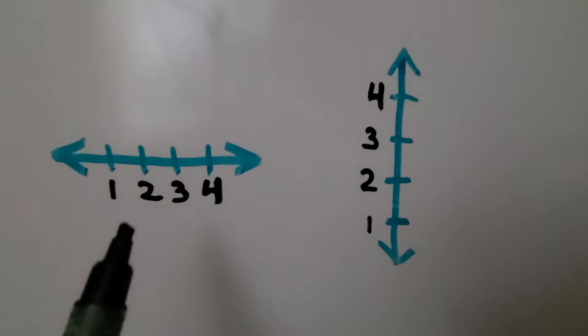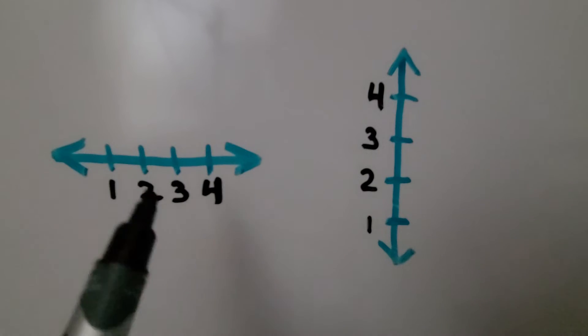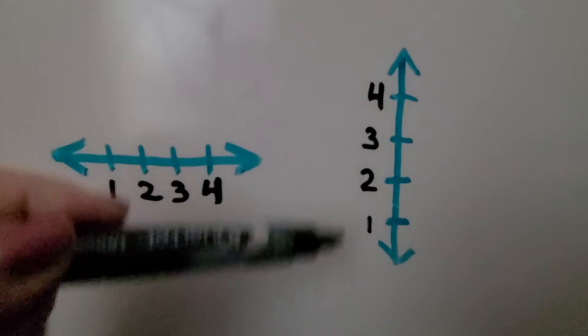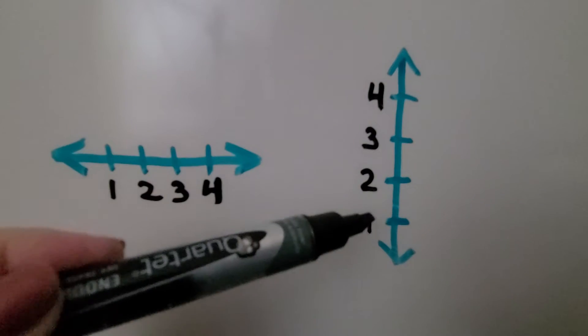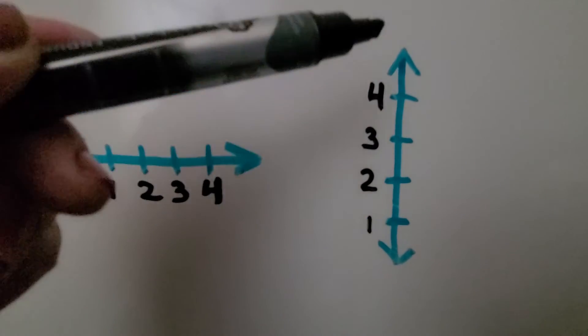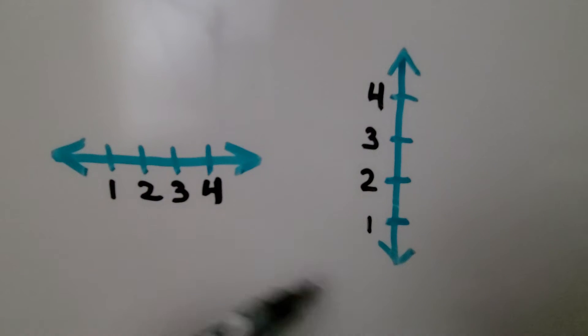So if we have a horizontal number line, we're going to put our numbers below the tick marks. And if we have a vertical number line, we're going to put our numbers to the left of the tick marks. And remember, as we go up, the numbers will go up. And as we go down, we'll get into the negatives.